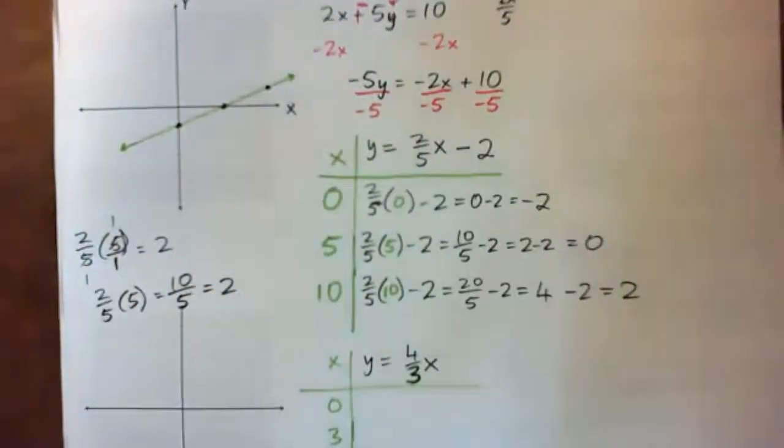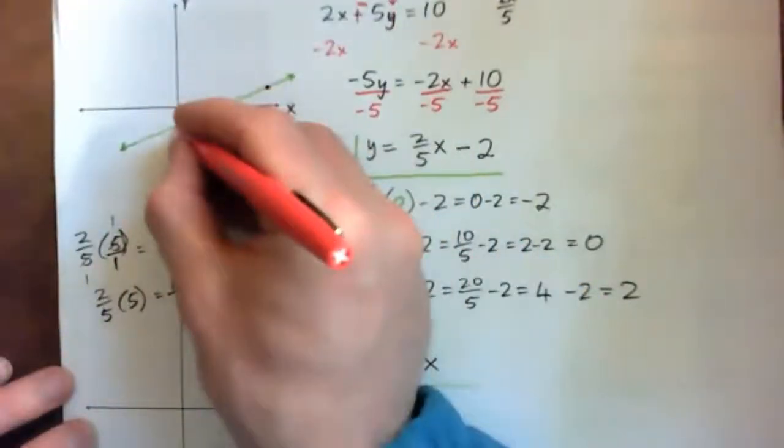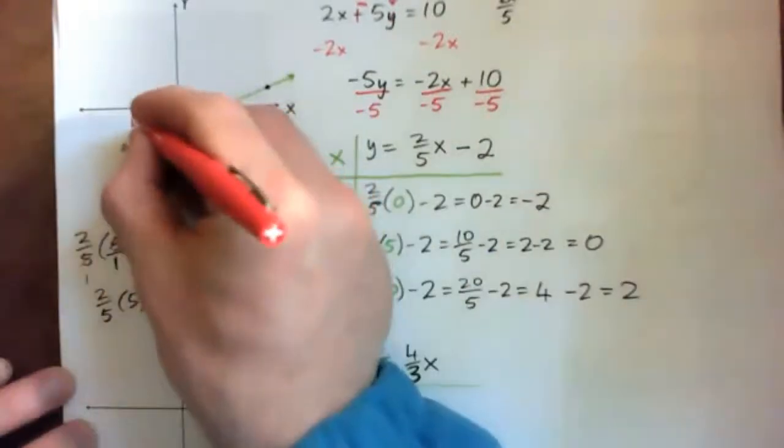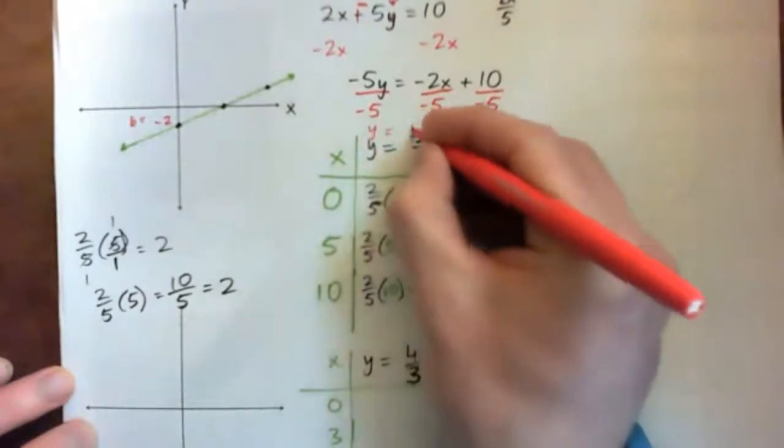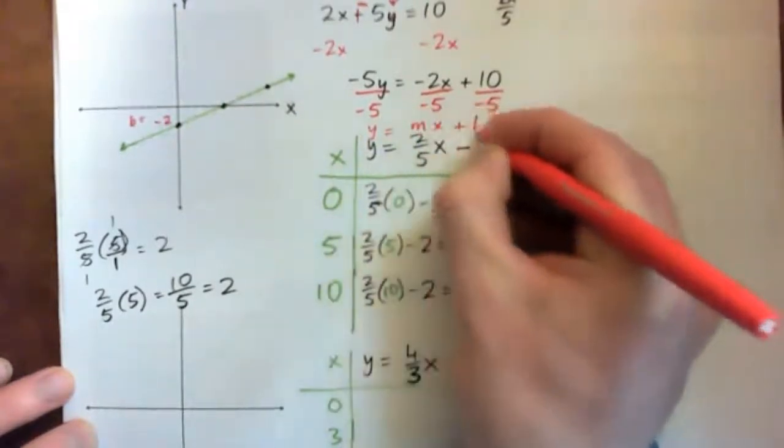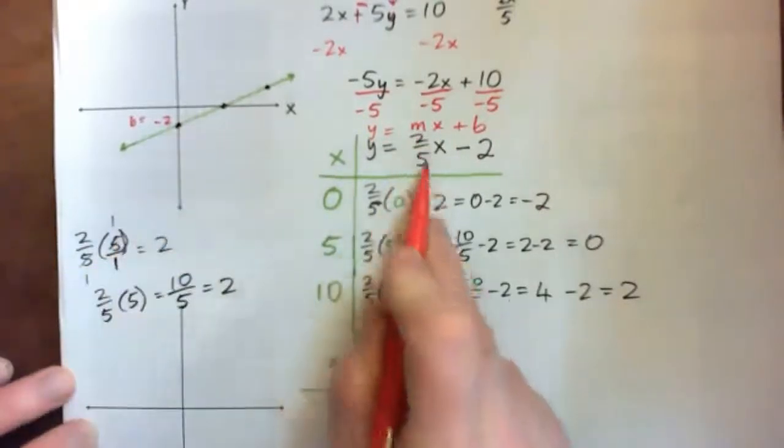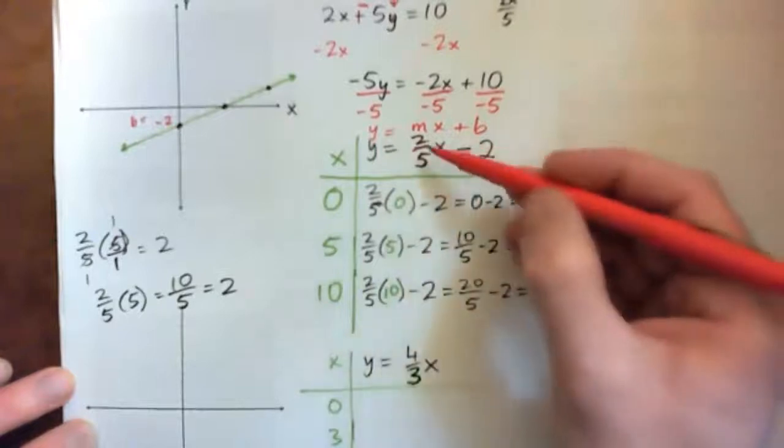And then on that line, let's just double check the slope and the y-intercept. We'll notice that the line hits the y-axis at negative 2. So, that is your b, your slope. So, this is y equals mx plus b. So, b is negative 2. That makes sense. And m should be 2 fifths.